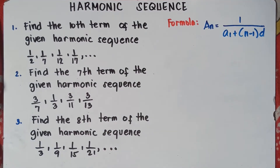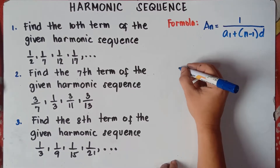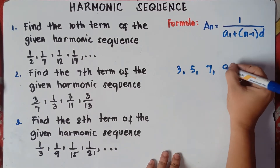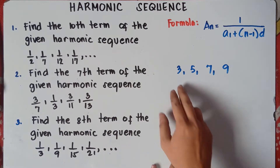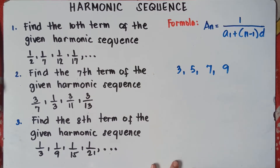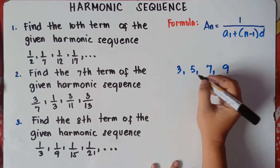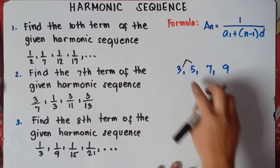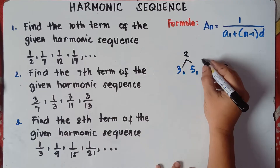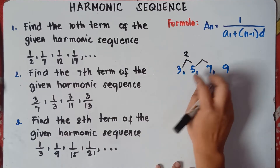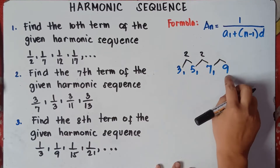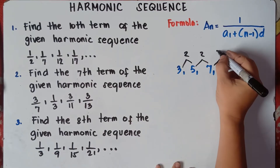Do you still remember class, arithmetic sequence? For example: 3, 5, 7, 9. To know if this is an arithmetic sequence, of course you need to get the common difference. To get the common difference, simply subtract the second term by the first term. So 5 minus 3 is 2. The third term by the second term: 7 minus 5 is 2. The fourth term minus the third term: 9 minus 7 is 2.